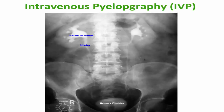Intravenous pyelography — radiopaque material is injected into the veins, then secreted by the kidney to visualize the calyces and the pelvis of the ureter and the ureter itself. The ureter descends at the tips of the transverse processes of the lumbar vertebrae, then the sacroiliac joint, then the ischial spine. This is the X-ray course of the ureter.